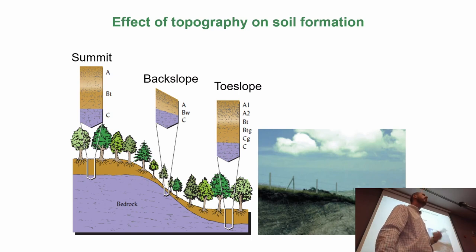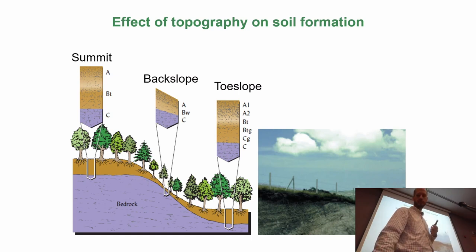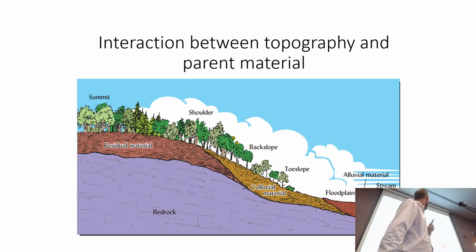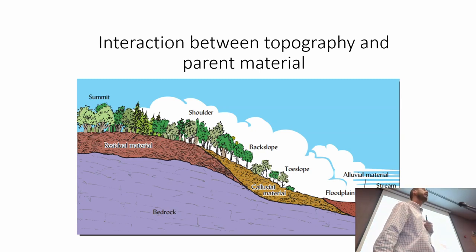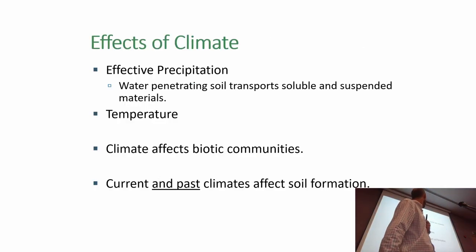Together with the topography in a catena, you also have changes in climate, organisms — they are all interrelated. Parent materials also differ depending on position in the topography: in-situ soils from bedrock, colluvial materials, alluvial materials, with vegetation also related to topography and climate.